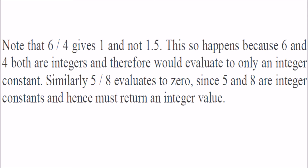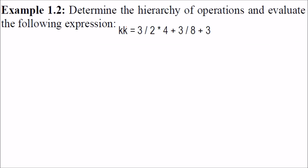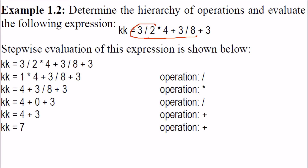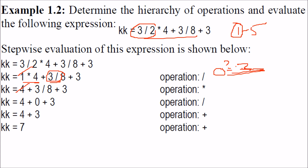Another example: first 3/2 is computed, giving 1.5, but since it is integer, result is 1. Then 1*4 = 4. Then 3/8 gives 0-point-something, but since it is integer only 0 is taken. Then 4 + 0 = 4, and 4 + 3 = 7. So you must identify the hierarchy and find the result step by step.